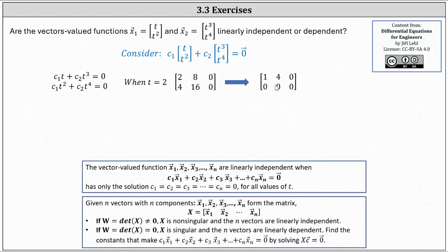Notice the first row indicates c1 plus 4c2 equals zero or c1 equals negative 4c2. Here we can select any value for c2 and determine c1, which will satisfy the system of equations when t equals two.